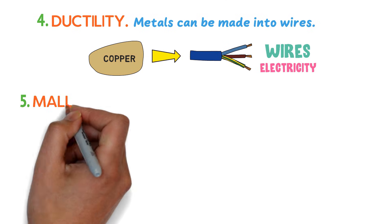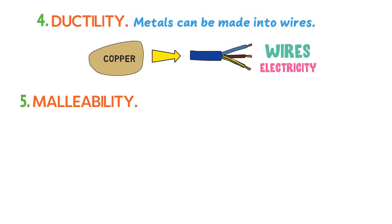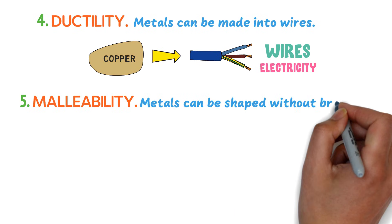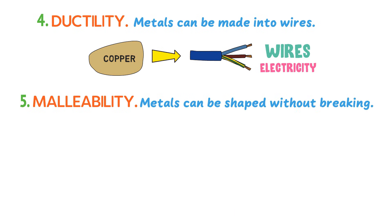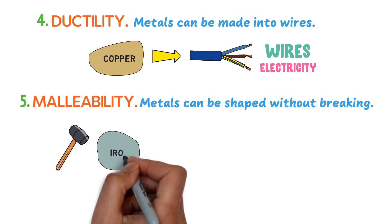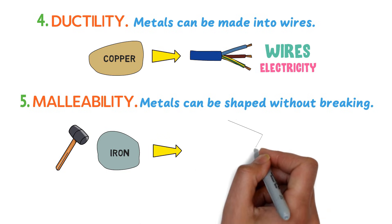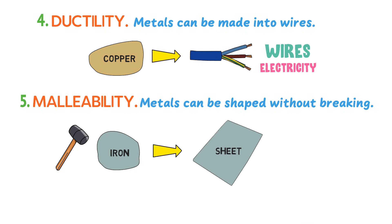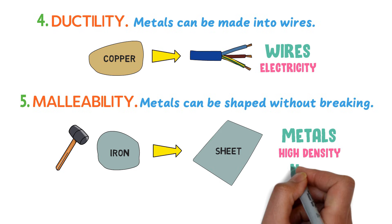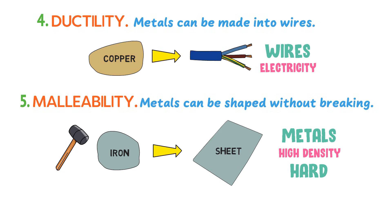Fifthly, malleability — metals are malleable. It means that metals can easily be shaped without breaking. For example, using a hammer, we convert iron into long sheets. Also remember that comparatively, metals have high density; they are hard and heavy.